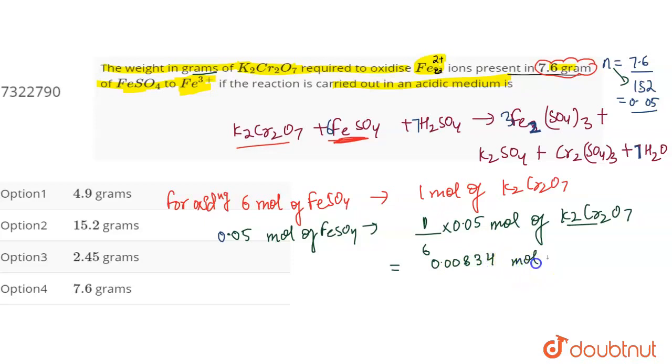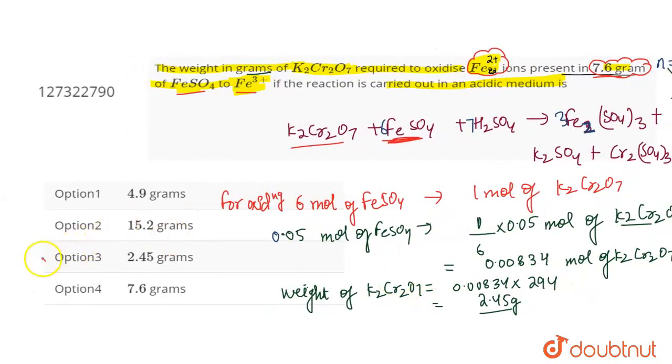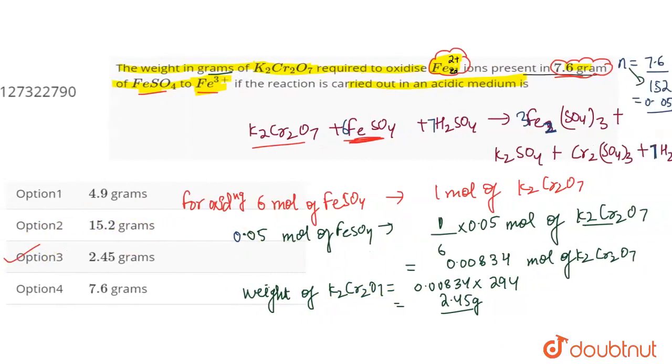So when you calculate weight of K2Cr2O7, it will be equal to how many moles you have, multiply by its molar mass. Molar mass is 294, so you will solve it. Your answer will be 2.5 grams. So you will say that we need 2.5 grams if we oxidize Fe2 positive to Fe3 positive, and FeSO4 7.6 grams. So here, the answer will be basically the third option will be correct. Thank you.